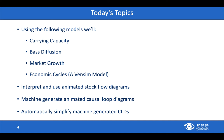What we're going to focus on today is a smaller list of topics. Using models like Carrying Capacity, Bass Diffusion, Forrester's Market Growth, and NatMass' Economic Cycles (a Ventsim model), we're going to focus on LTM. We're going to interpret and use the animated stock and flow diagrams new in Stella Live 2.0, machine-generate animated causal loop diagrams using Stella Live, and automatically simplify those machine-generated CLDs to better expose the underlying feedback structure of our models.